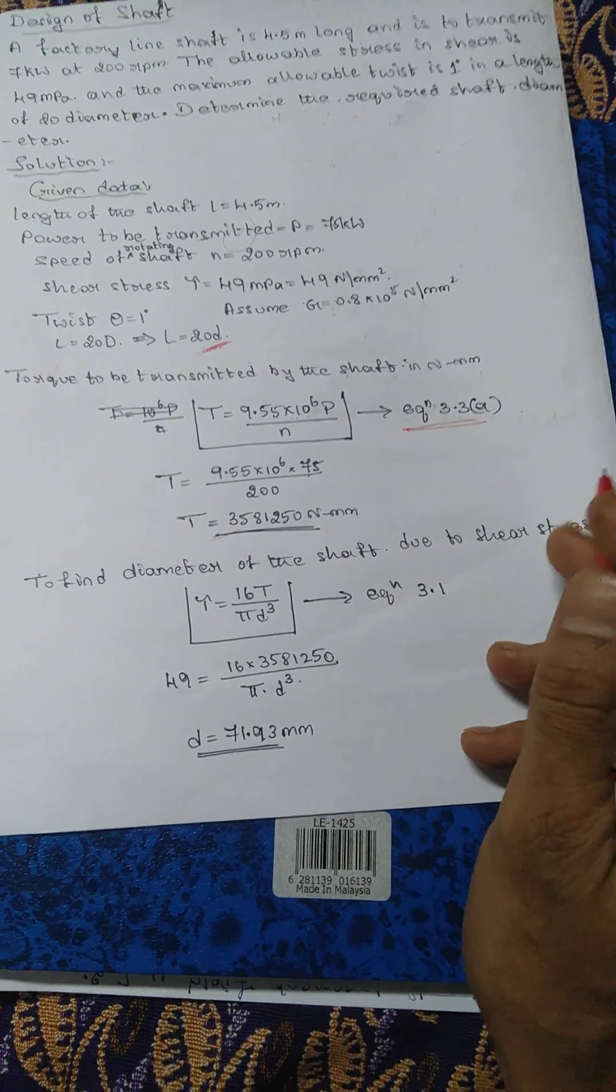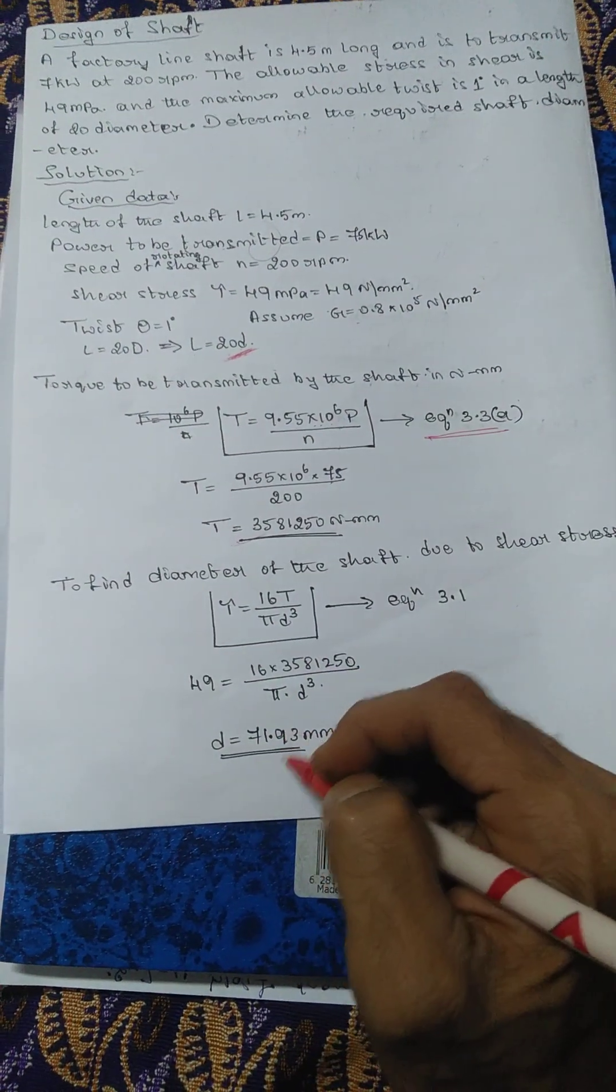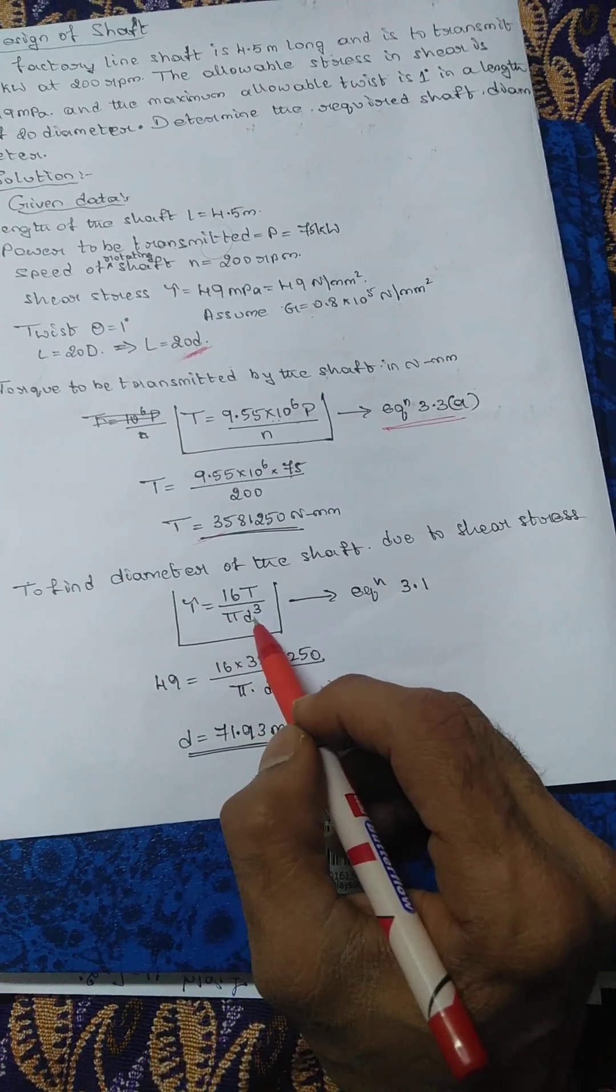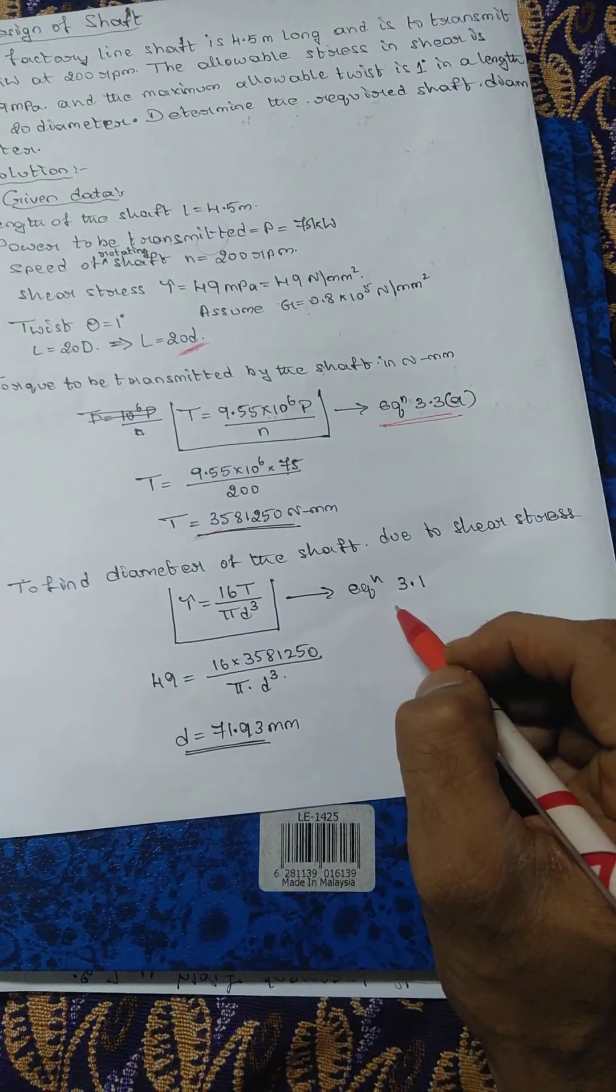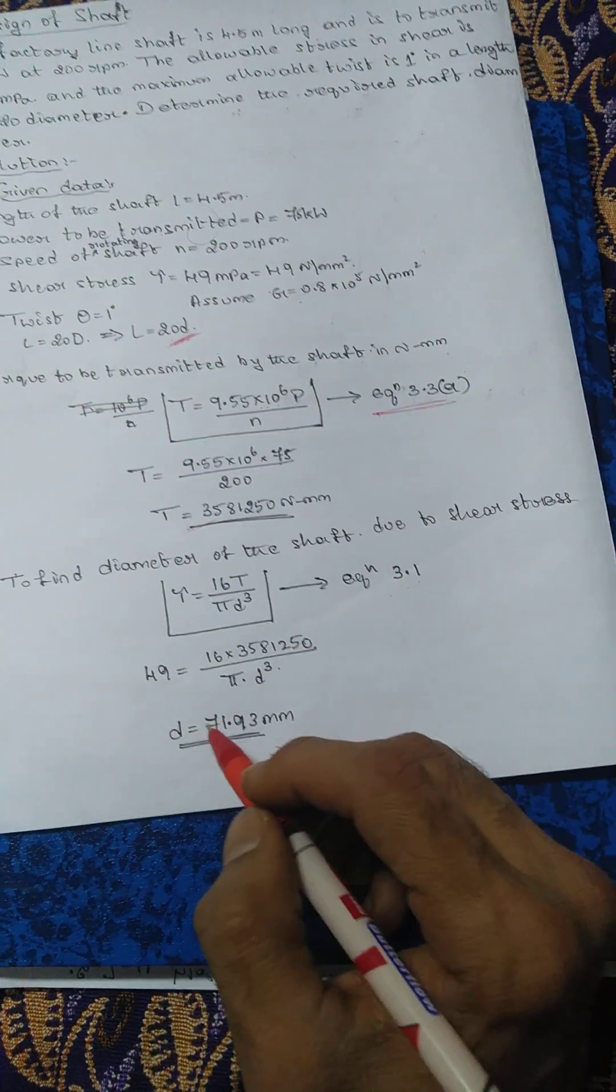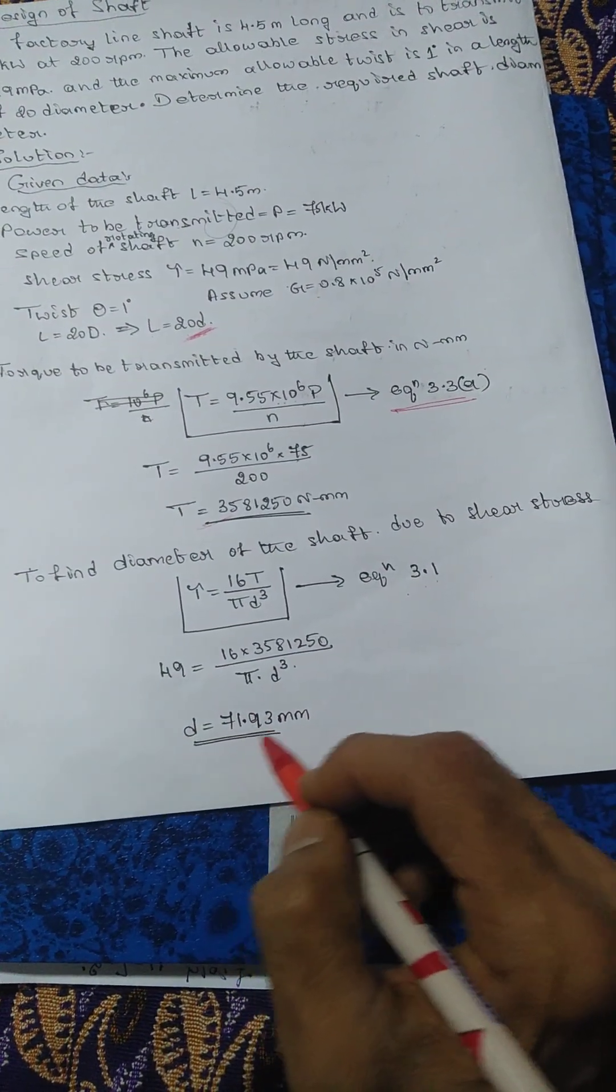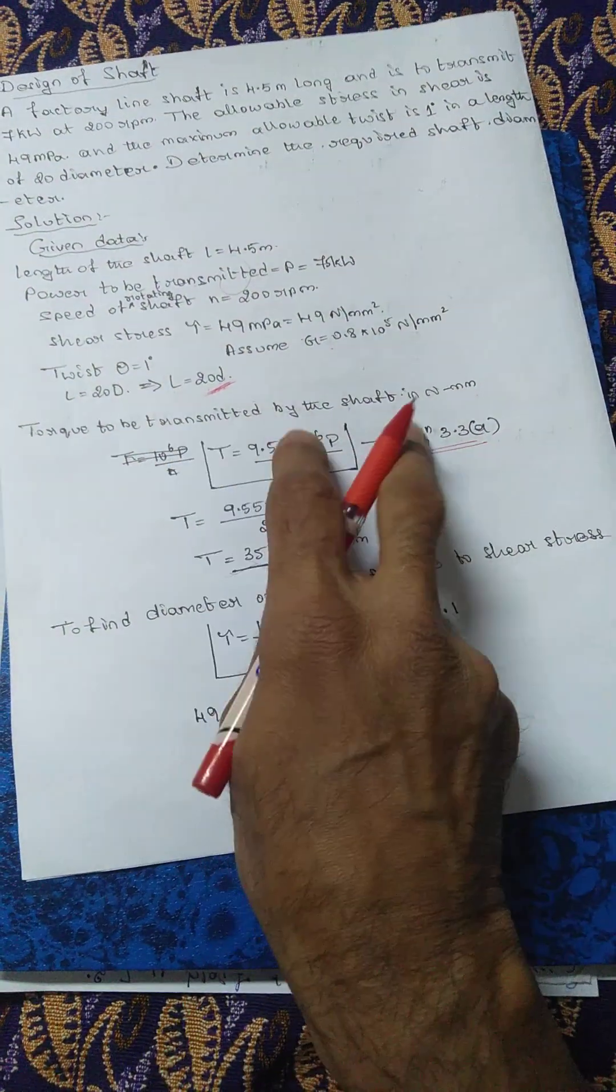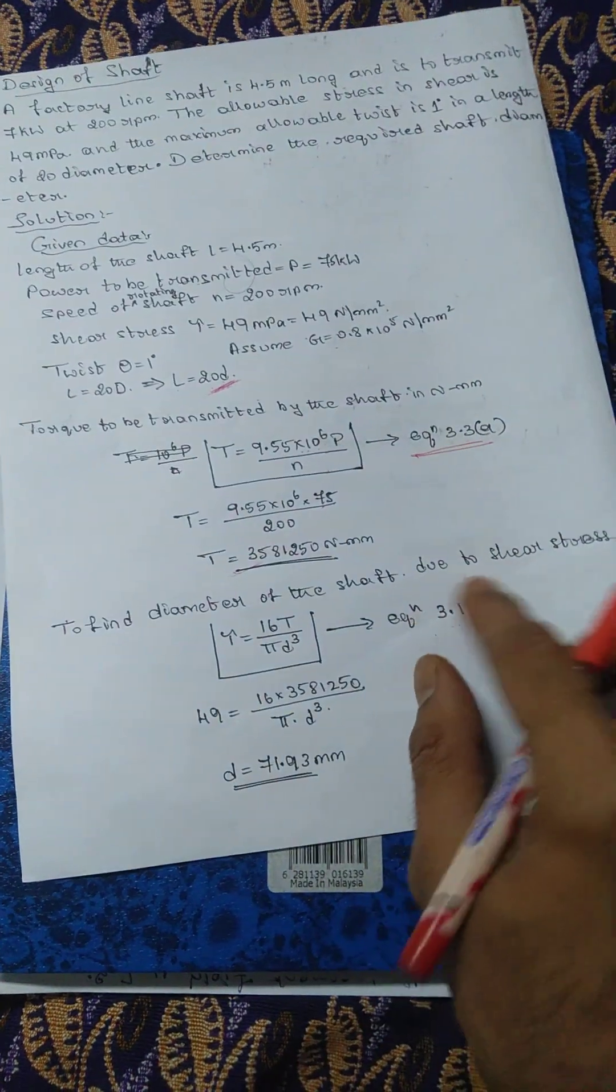Next, to find the diameter of the shaft due to shear stress. The equation is tau equals 16T divided by pi D cube, that is equation 3.1 in the data handbook. After substitution you will get the value of D as 71.93 millimeters for shear strength of the shaft.